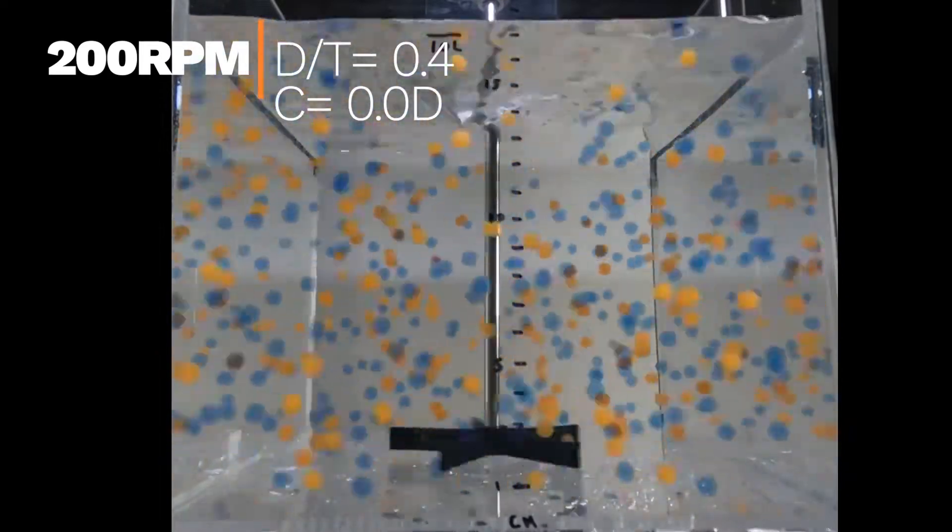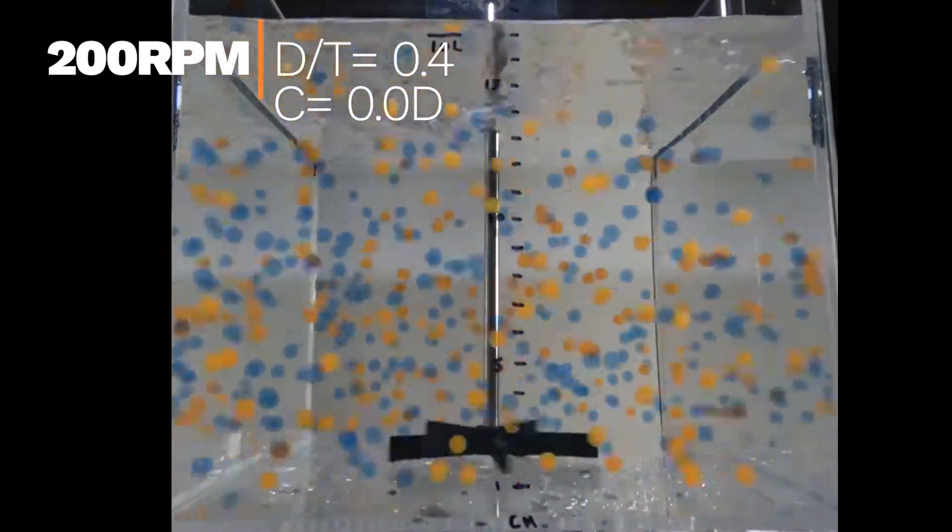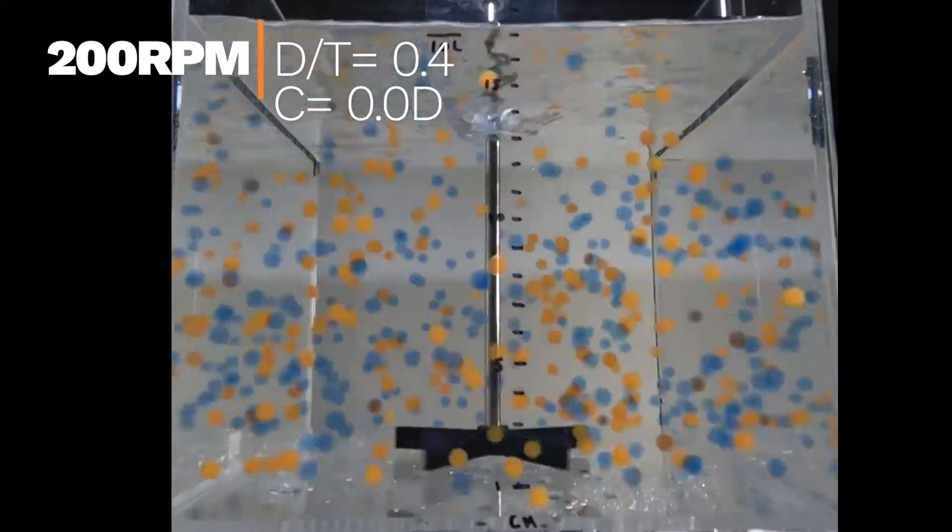The vortex generated by the 5 blade agitator is also significantly greater than the 3 blade version.